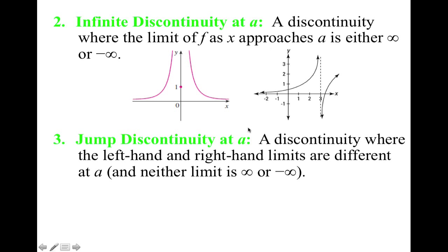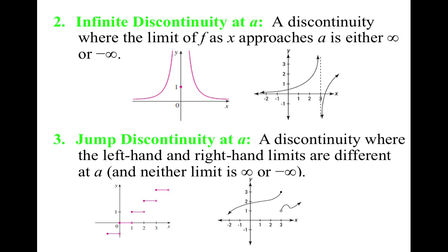The third one is called jump discontinuity at a — a discontinuity where the left-hand and right-hand limits are different at a, and neither limit is infinite or negative infinity. Graphically, you would have to jump to get to the other part of the graph. On a step function, you can see the right is approaching one side and the left is approaching another.